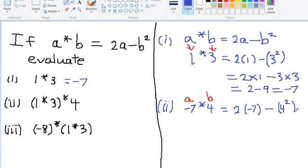So this is 2 multiplied by negative 7, subtract 4 multiplied by 4. 2 times 7 is 14, and a positive times a negative is a negative. So we get negative 14, subtract 16, which will give us negative 30.